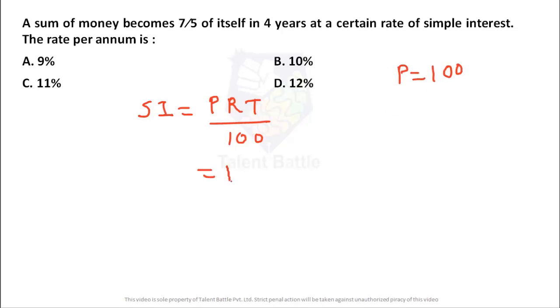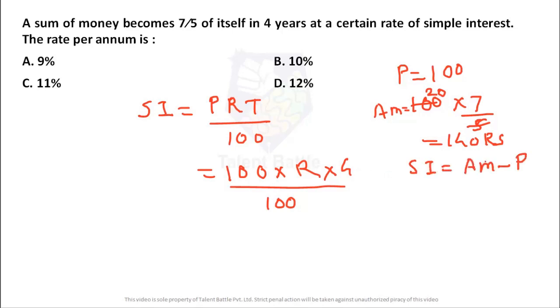So I will just put the values over here. Principle is hundred, rate I want to calculate, time they have given as four divided by hundred. Now what will be the simple interest? Simple interest is nothing but whatever that amount is. Like suppose hundred and it is becoming seven by five of itself. So hundred into seven by five. So what is the amount after four years? 5 into 20, the amount is going to be 140 rupees. But what is the simple interest? The simple interest formula is nothing but amount minus principal. So amount after four years is 140. Principle is 100 rupees. So actual simple interest is nothing but 40. So I can write simple interest as 40. 100 and 100 will get cancelled. Rate of interest will be 10%.